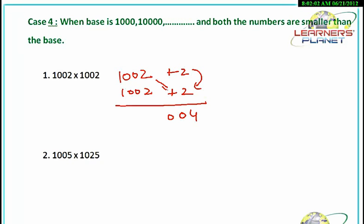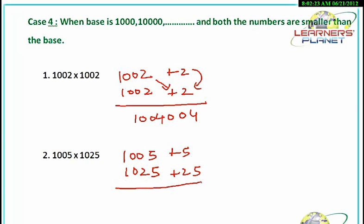The remaining calculation is the same: 1002 plus 2 is 1004 — a very big number but a very fast and interesting calculation. In the next case, 1005 into 1025: it's plus 5 and plus 25. Now 25 into 5 is 125; we have to fill up three digits and we are getting them. With this addition, 1025 plus 5, we get 1030.